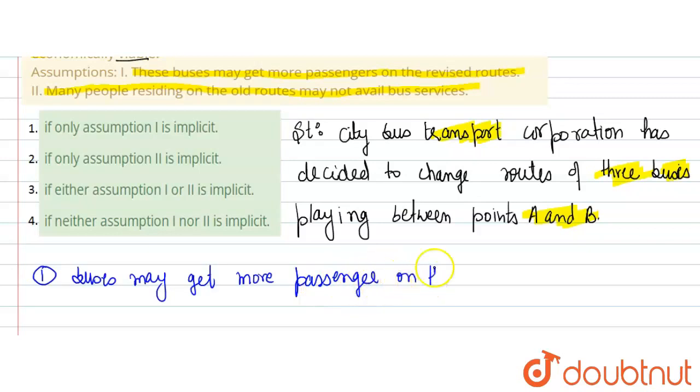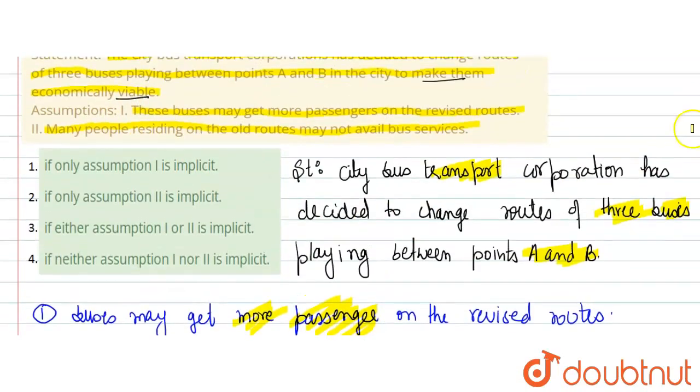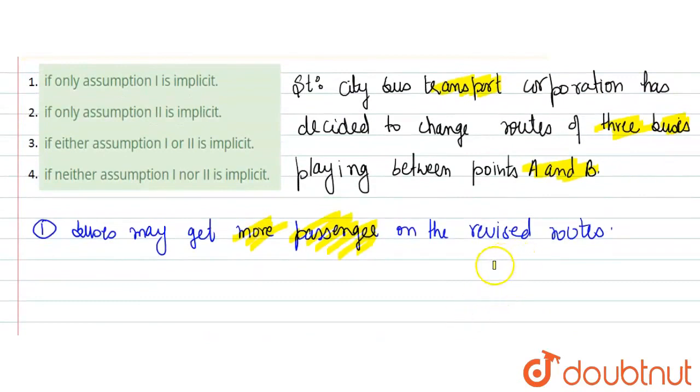On the revised routes, there will be more passengers. Definitely this was thought about, that's why they changed the routes. To make these buses economically viable, they need to earn more money, so more passengers means more money. So definitely this was the thinking behind this statement.